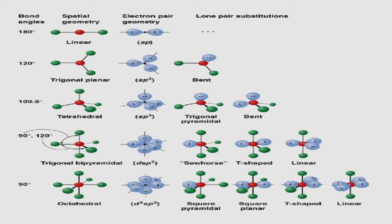The VSEPR model gives an idea of the best orientation or disposition in three-dimensional space of these atoms. The lone pair–lone pair repulsion is the highest, the lone pair–bond pair repulsion is intermediate, and the bond pair–bond pair repulsion is the least. Since lone pair–lone pair repulsion is maximum, we place non-bonding pairs or lone pairs farthest apart to minimize repulsion and maximize molecular stability.